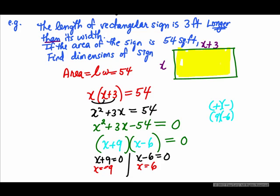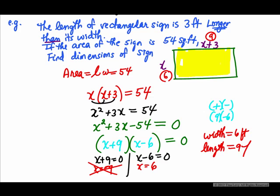However, you can't have a negative length — x represents the width, so we can't have a negative value. The width is 6, and 6 plus 3 makes the length 9. So the width is 6 feet and the length is 9 feet. That's the appropriate solution. We'll go on to another application.